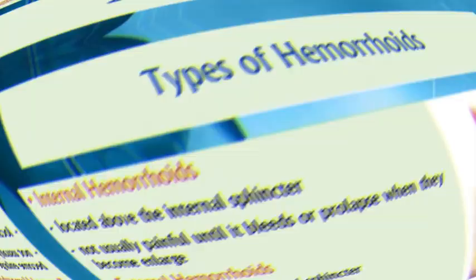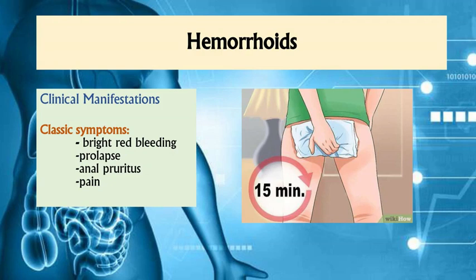Common symptoms for hemorrhoids include bright red bleeding, especially when hemorrhoids rupture or burst. Prolapsing or bulging is also very evident over the affected area. Anal pruritus or itching may be experienced, and pain is also a symptom.